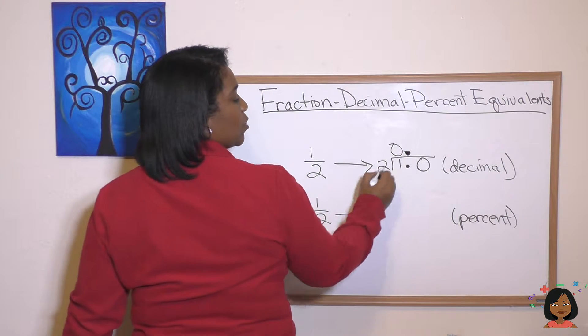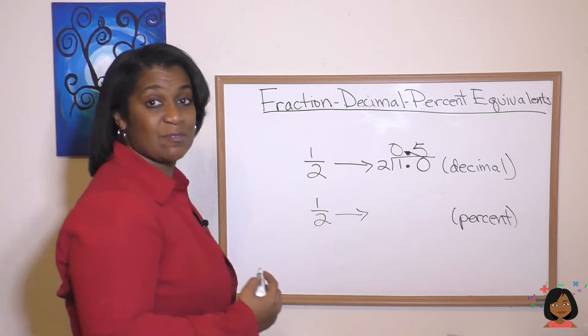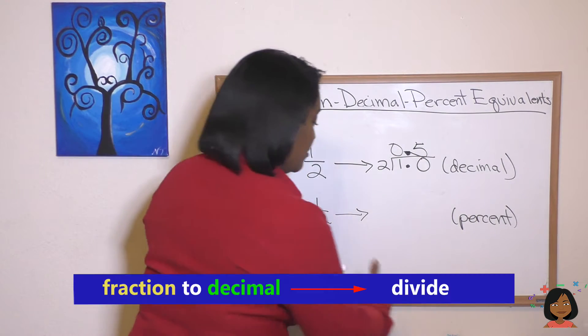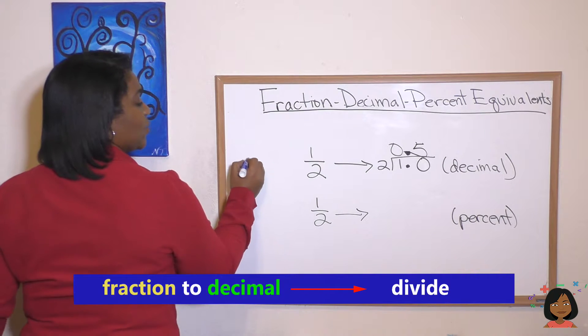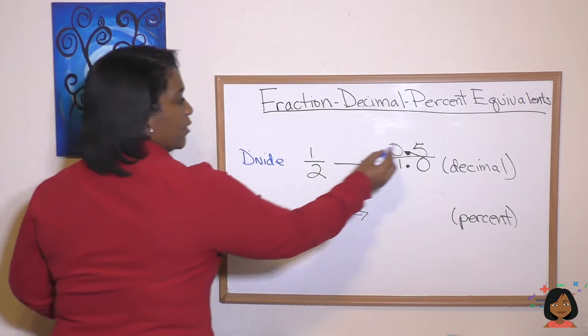What happens? Well two can't go into one but it can go into ten and look at that it gives me a decimal. So we divide to get to a decimal.